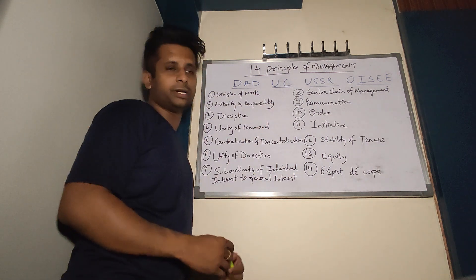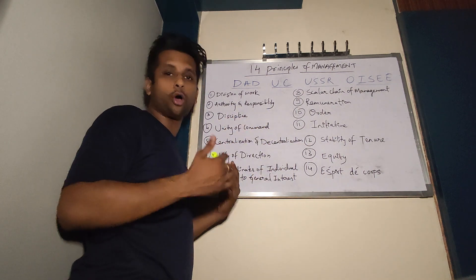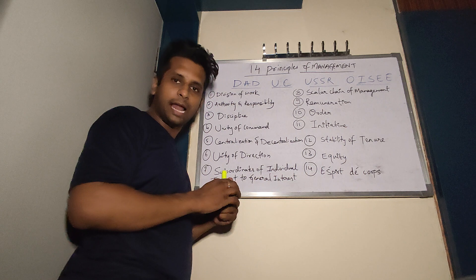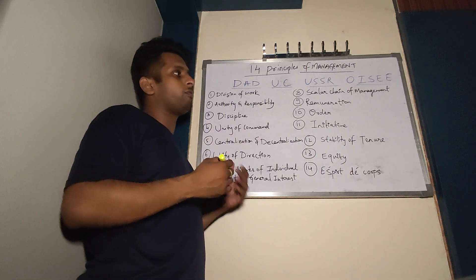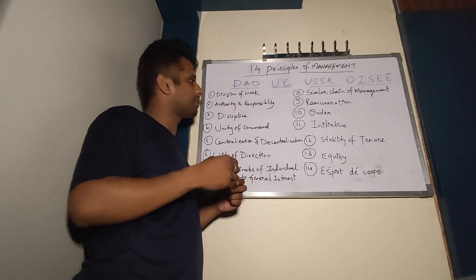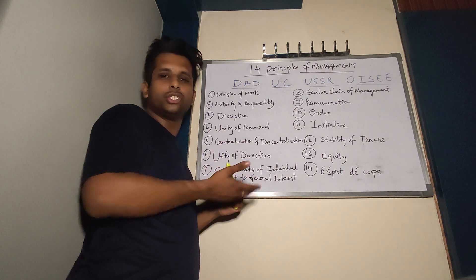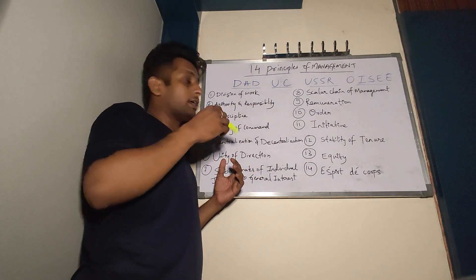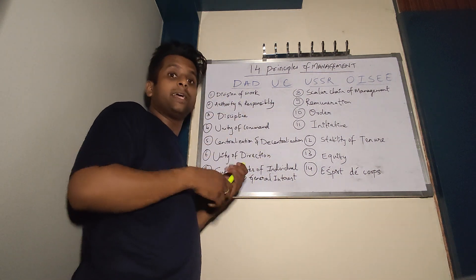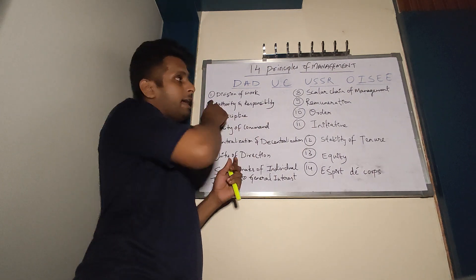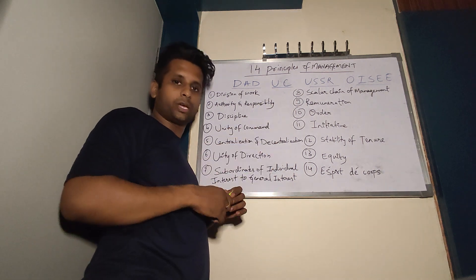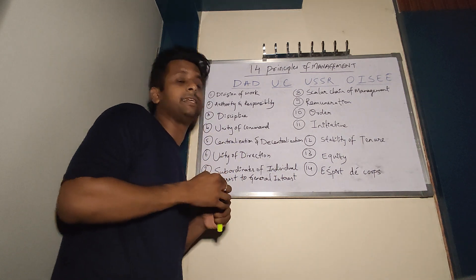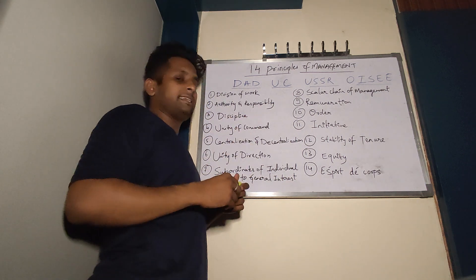Authority and Responsibility: Authority is the power to give orders, while Responsibility is the liability to get the work done. Authority flows from top to bottom — for example, a college principal has the authority to give orders. Responsibility is like teachers having been assigned separate subjects; it is their responsibility to complete the syllabus on time.